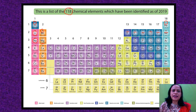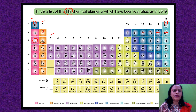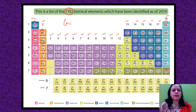Let us start in detail about how these elements have been classified. The numbers 1 through 18 along the top are the groups. Groups are the vertical columns — when you move from top to bottom, these are known as groups.